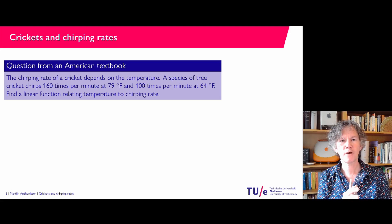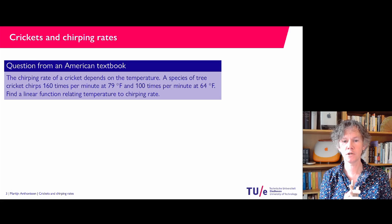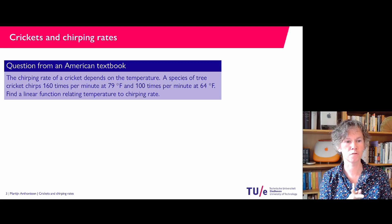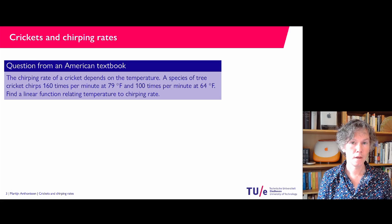In a textbook I have found this problem. It says the chirping rate of a cricket depends on the temperature. A species of tree cricket chirps 160 times per minute at 79 degrees Fahrenheit and 100 times per minute at 64 degrees Fahrenheit. The question is to find a linear function relating temperature to chirping rate. Now obviously the textbook uses Fahrenheit for temperature, which is not what we do in Europe — we would use Celsius.